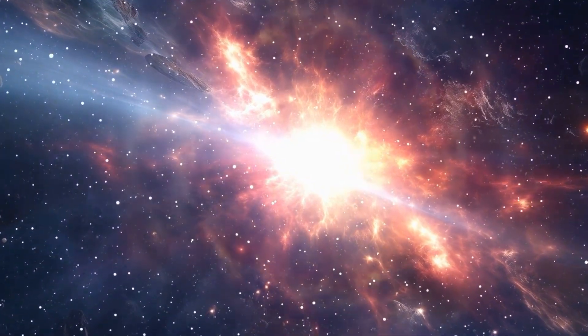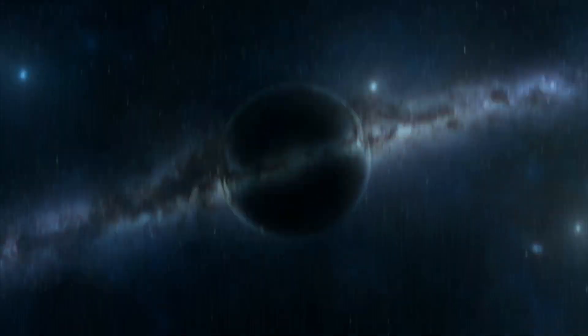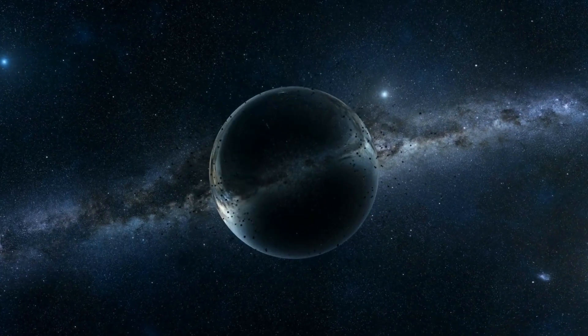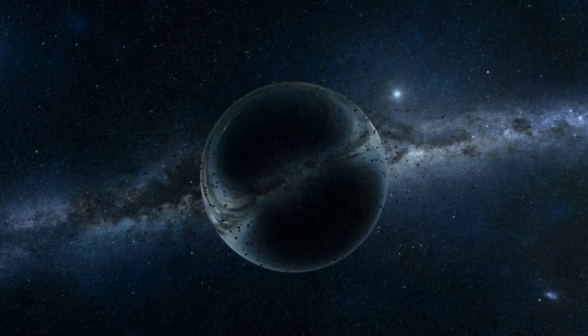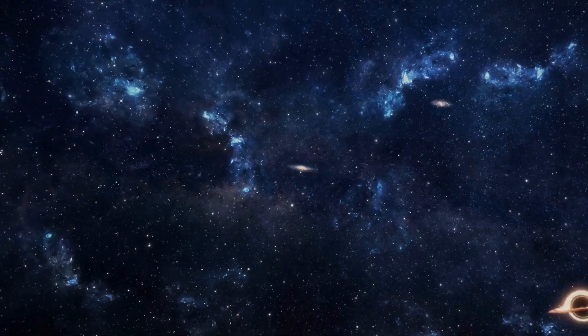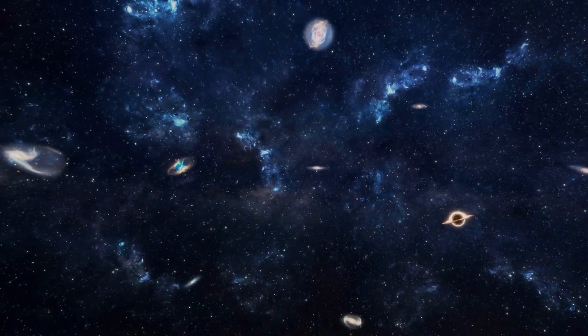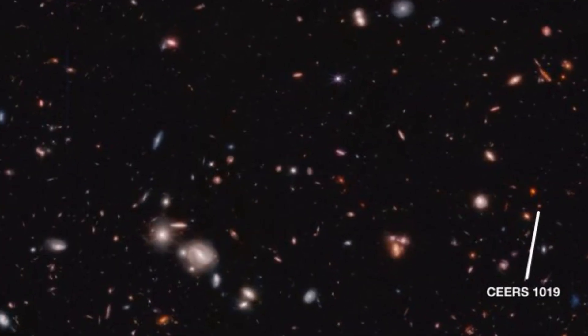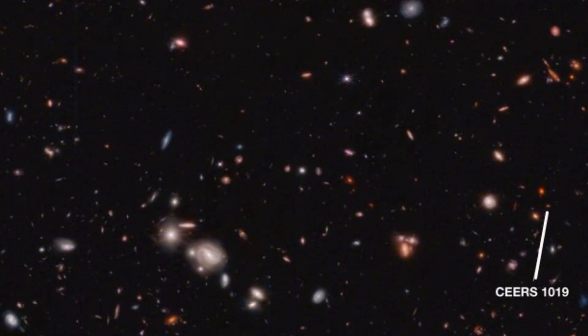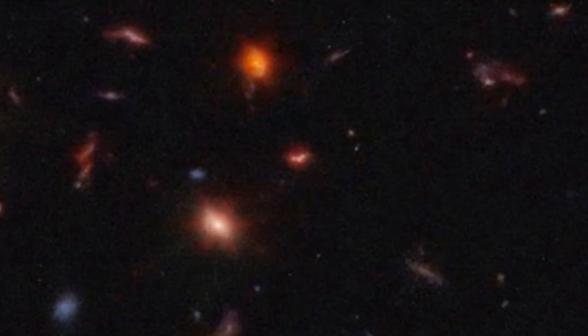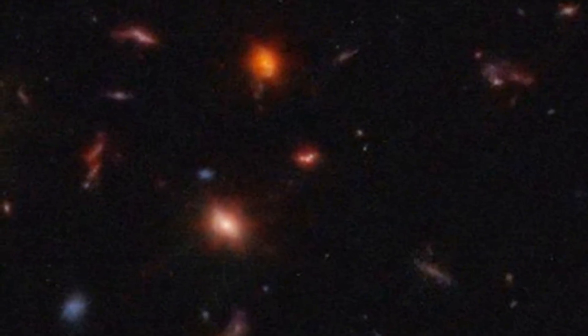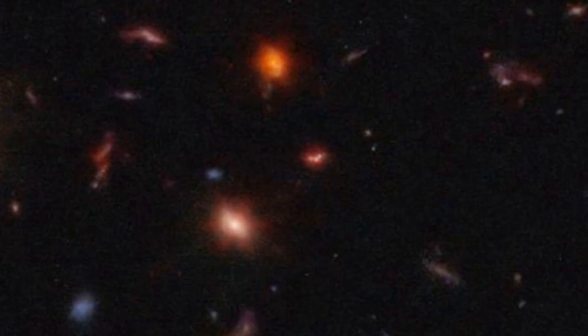These galaxies shouldn't exist, not yet. Take, for example, JADES-GS-z14-0 and z14-1, galaxies that may have formed when the universe was only 2% of its current age, or Sears-1019, a galaxy with an unexpectedly massive black hole at its center, far earlier than any existing model predicts.